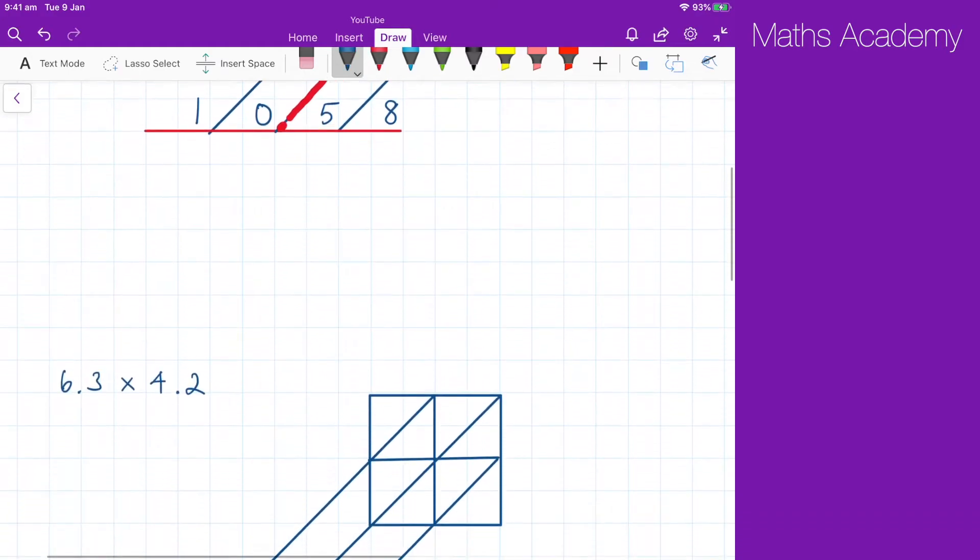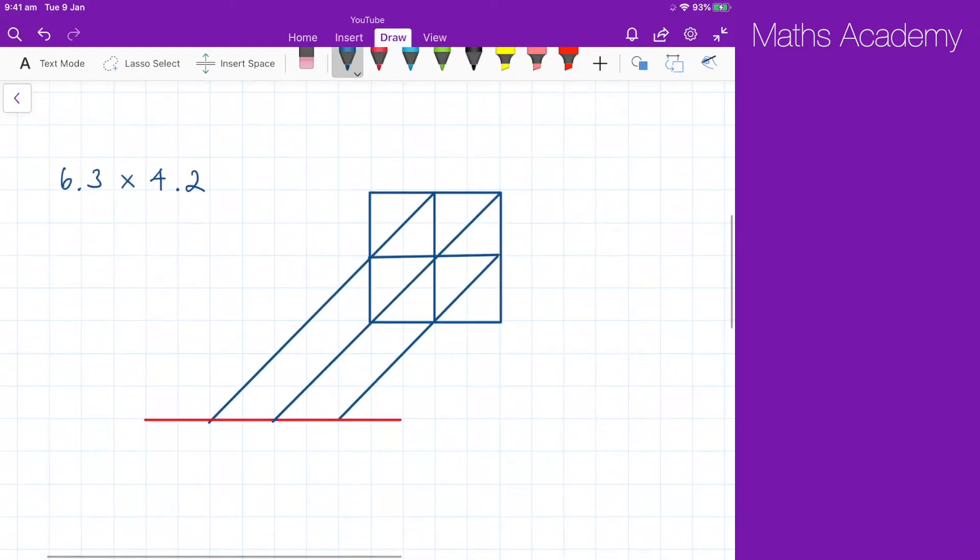I'll just throw in another quick example for you. So we've got 6.3, 4.2. Do your multiplication. 6 4s are 24. 3 4s are 12. 3 2s are 6. And 6 multiplied by the 2 is 12.